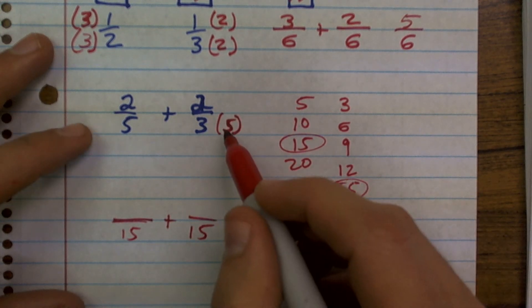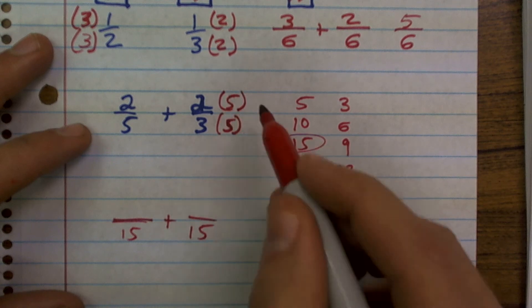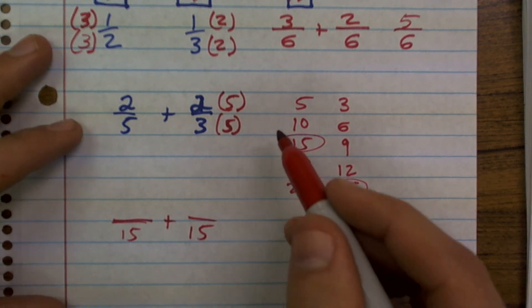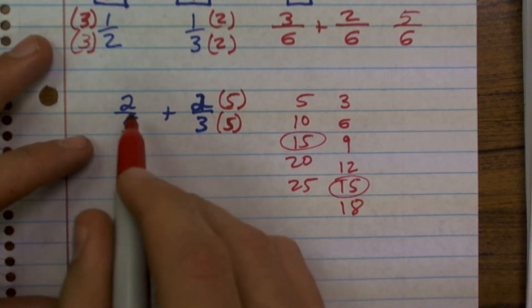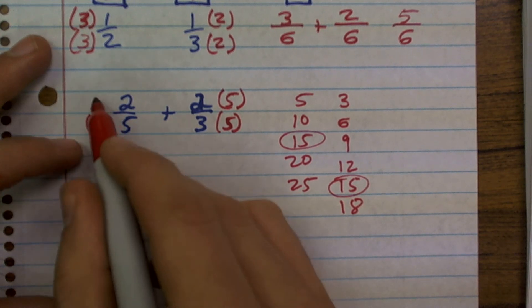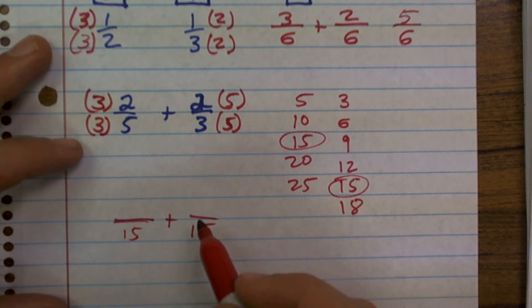And remember, whenever you multiply your denominator by 5, to keep an equivalent fraction, you're going to have to multiply the numerator. So to get 5 to be 15, I need to multiply by 3, and I multiply on the top and the bottom.